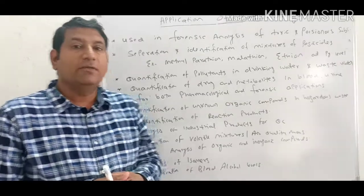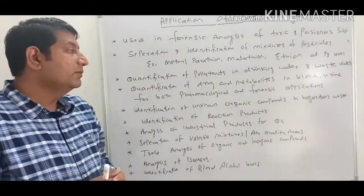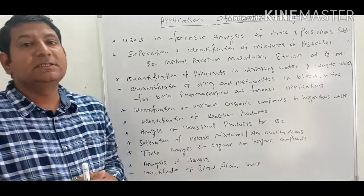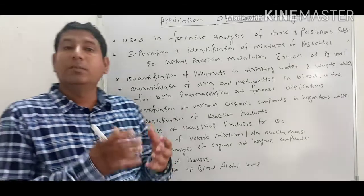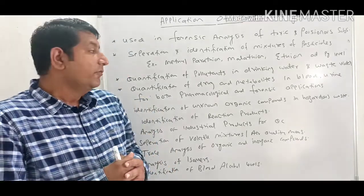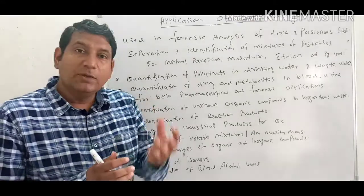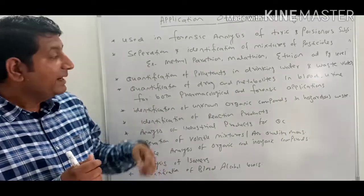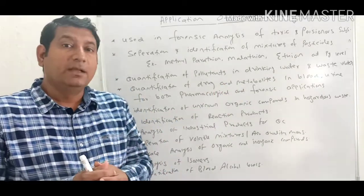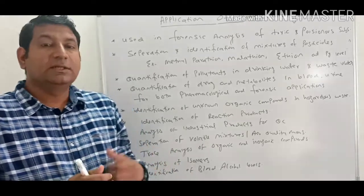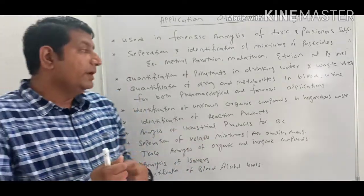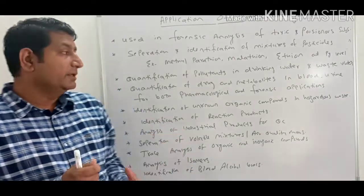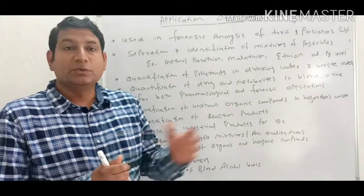Another application is quantification of drug metabolites in blood and urine for both pharmacological and forensic purposes. In bioanalysis, we determine the concentration of drugs in human plasma, requiring a method that can accurately quantify the drug quantity. In forensic sciences, toxins and poisons present in the human body must be identified at micro to nano levels, for which gas chromatography is the best and most suitable technique.